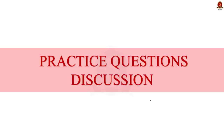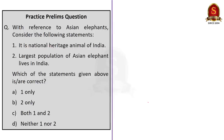We have four practice prelims questions today. Let us see them one by one. The first question is a two-statement question regarding Asian elephants. The first statement is that it is the national heritage animal of India — this statement is correct. Elephant indeed is the national heritage animal of India. The second statement is that the largest population of Asian elephants lives in India — this statement is also correct.